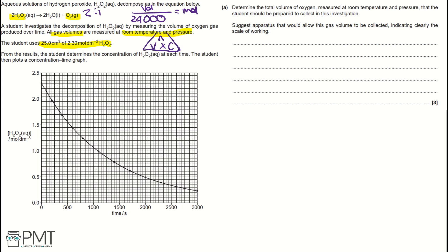Using the equation triangle to work out the number of moles of hydrogen peroxide: moles equals volume times concentration. That would be 25 × 10⁻³ dm³ (converting cm³ to dm³), multiplied by 2.3, giving us 0.0575 moles of hydrogen peroxide.